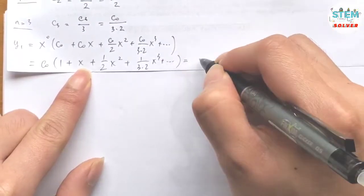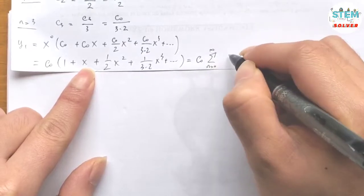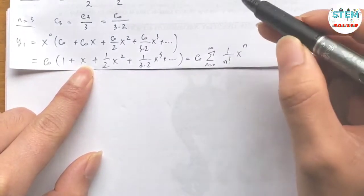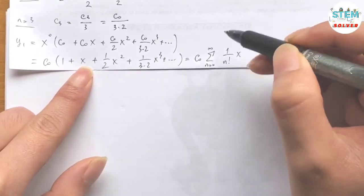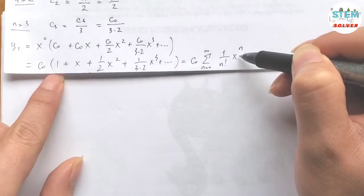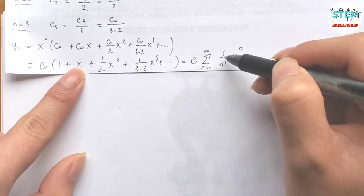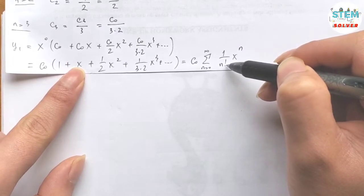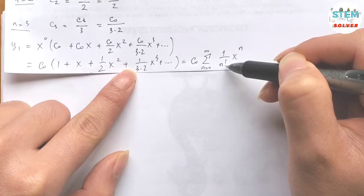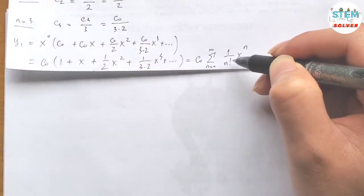We can verify: plugging in n=0 gives 1 over 1 times x to the 0 which is 1; plugging in n=1 gives 1 over 1 times x; n=2 gives 1 over 2 factorial times x squared; n=3 gives 1 over 3 factorial times x cubed, and 3 factorial is 3 times 2 times 1. So this confirms the power series for e to the x.